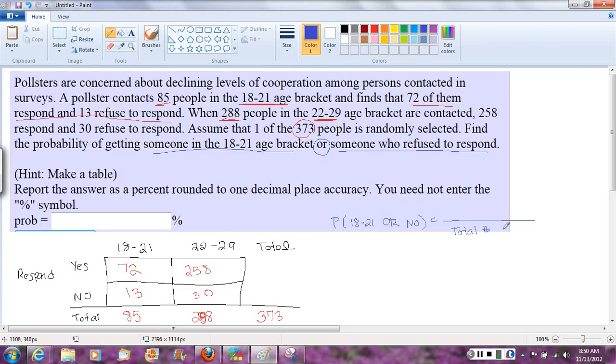The numerator for an or probability is going to be the number of people in the 18 to 21 category, plus the number of people in the no category, minus the number of people in both categories. That's the number of outcomes that would make this event happen.